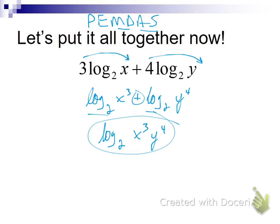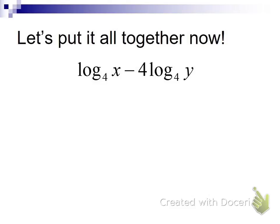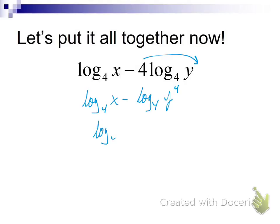Another one: coefficients to exponents first. There's not one on the first term; on the second, we've got this four. So I want to rewrite — rewriting is going to be your friend; rewrite as much as you need to. Make this y to the fourth. Now, we don't have any more coefficients, so we deal with our subtraction. One logarithm, log base 4, and we make this division: x over y to the fourth. Done.